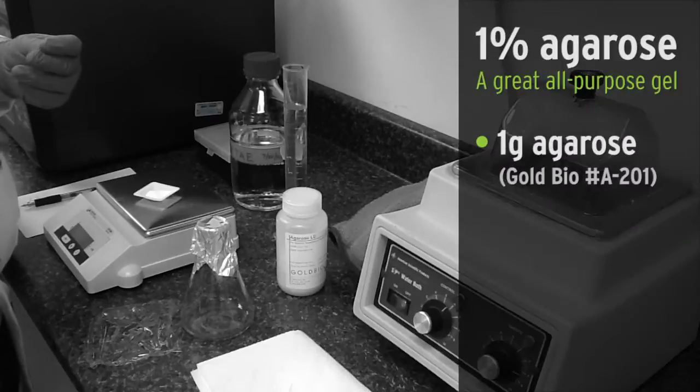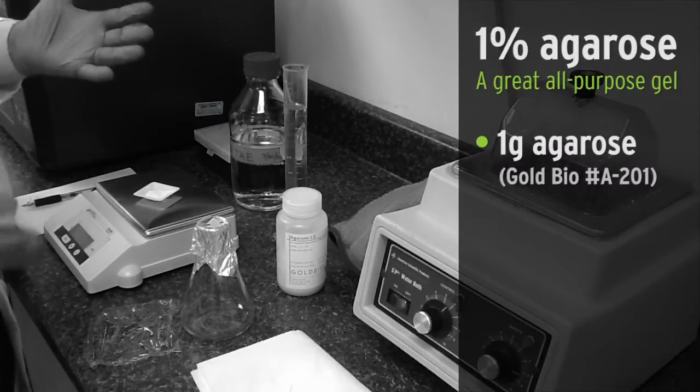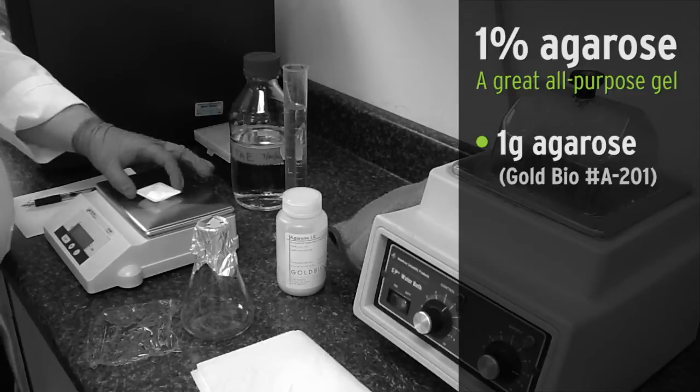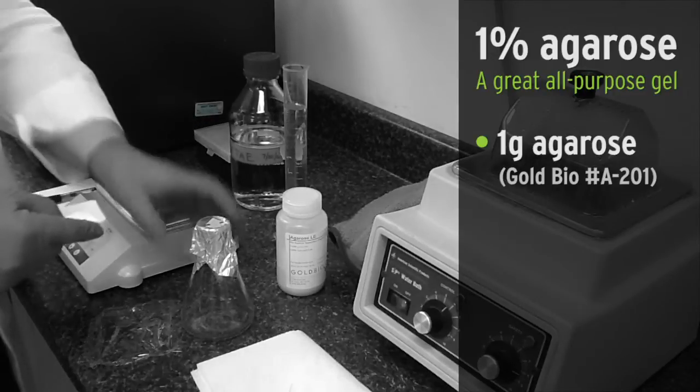We'll be making a 100 mil, 1% gel, which is a pretty good all-around gel. You'll start by weighing 1 gram of agarose and adding it to your flask.